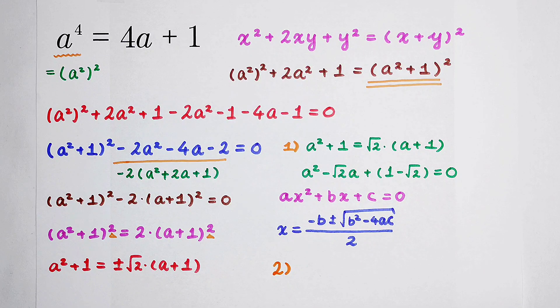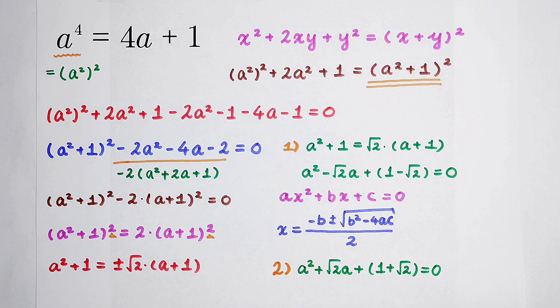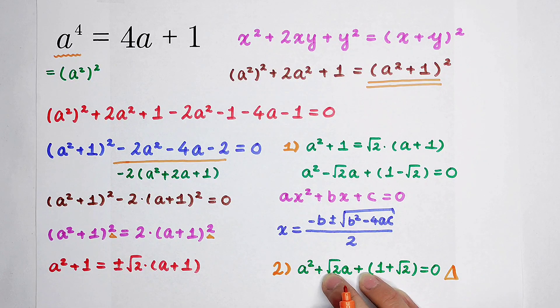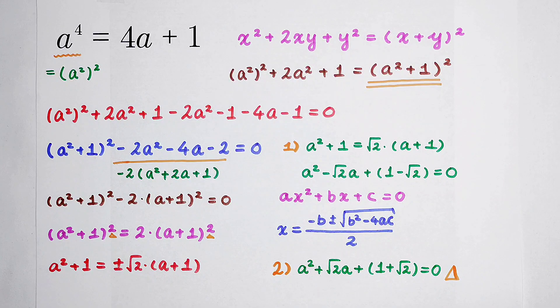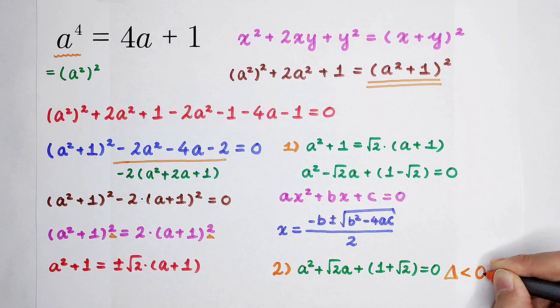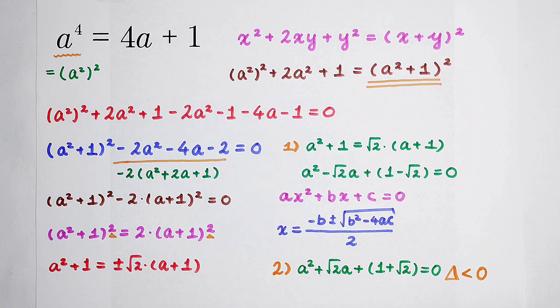For the second case, it's similar. But in this case, if you check the delta, you can find that the delta is b squared is square root of 2 all squared, it is 2, then minus 4 times a is 1, c is 1 plus square root of 2. That is minus 2 minus 4 times the square root of 2. It is smaller than 0. So there aren't any real roots. But there are other complex roots. You can solve them if you want. But this equation has only two real roots.